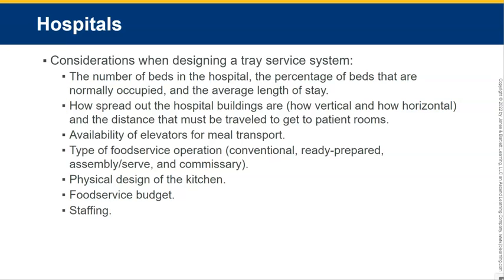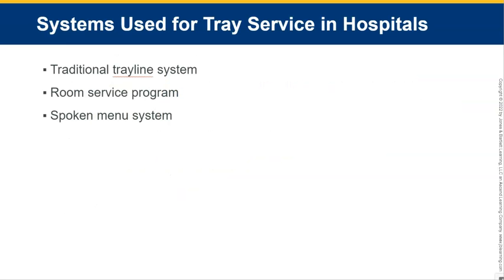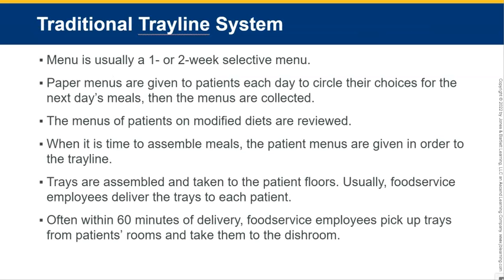For physical design of the kitchen, you also have to consider where everything is positioned, the food service budget as a heavy factor, and your staffing — do you have enough people to run the kitchen? There are three different systems used for tray service in hospitals: the traditional tray line system, a room service program, and a spoken menu system. The traditional tray line system uses a one or two week selective cycle menu. Paper menus are given to patients each day to circle their choices for the next day's meals.